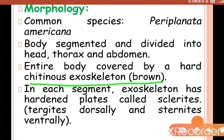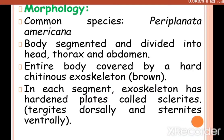The entire body of the cockroach is covered by a hard chitinous exoskeleton that is brown in color. In each segment of the body, the exoskeleton has hardened plates called sclerites — tergites dorsally and sternites ventrally.